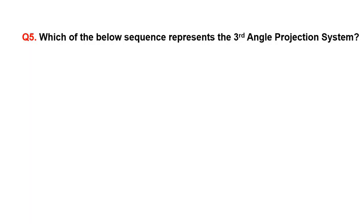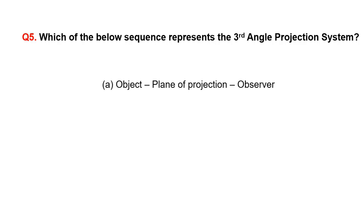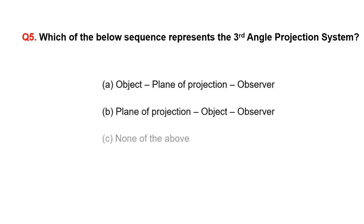Which of the below sequences represents the third angle projection system? A. Object, plane of projection, observer, or B. Plane of projection, object, observer, or C. None of the above?